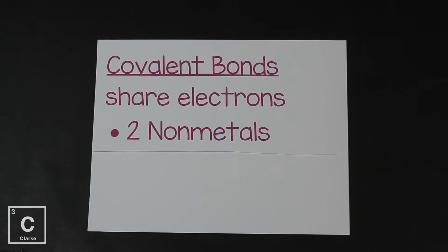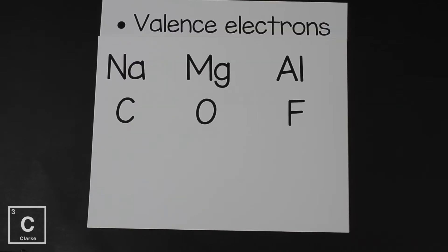Let's look at how covalent bonds are formed. Let's remember that covalent bonds occur when two elements share electrons, and this happens between two non-metals. Before we talk about how covalent bonds are formed, let's just remember a little bit about Lewis dot structures.